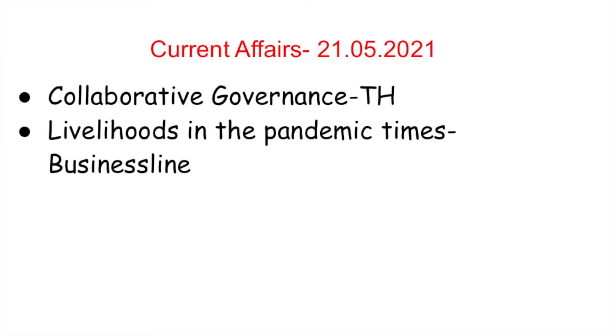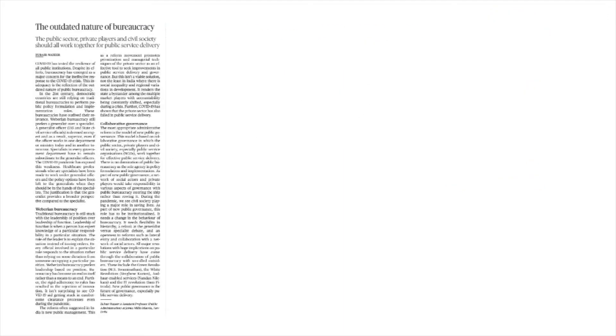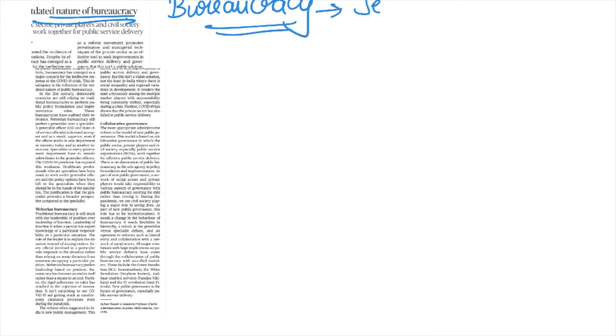Welcome back to Analog IAS current affairs analysis for 21st May 2021. In this video we'll be looking at a couple of issues: the outdated nature of bureaucracy. This article is with respect to the second wave of COVID and how it has exposed the inherent weaknesses of our bureaucracy. Bureaucracy's major role is to ensure service delivery, and this role has taken a hit in this pandemic. This article highlights the necessity of reforms in the way bureaucracy functions in our country for better results.